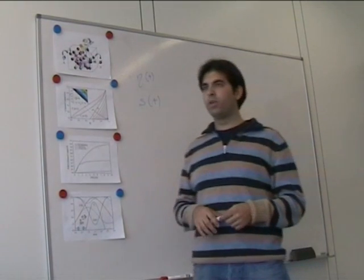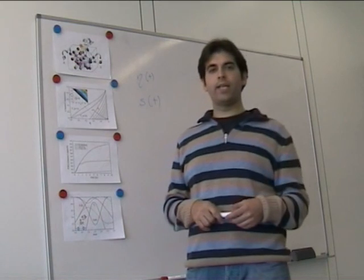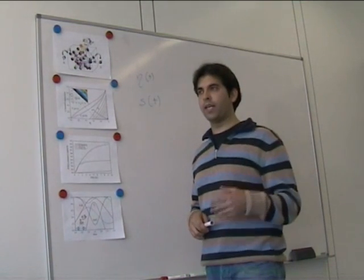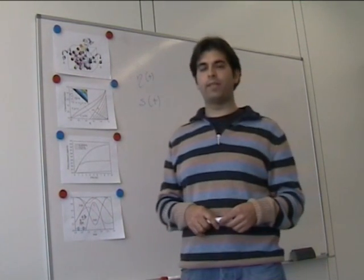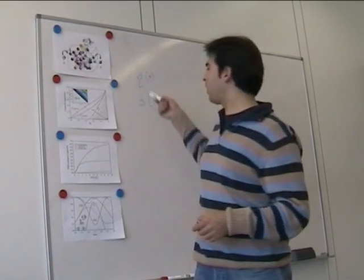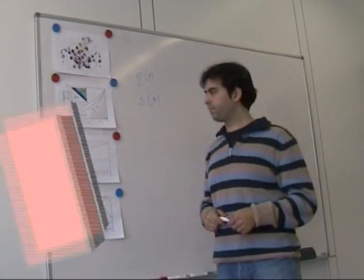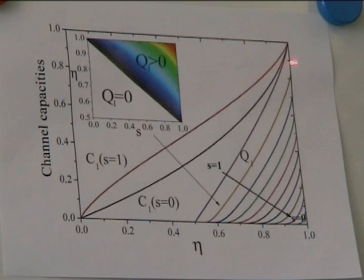In this work, we derived analytically and numerically the classical and quantum channel capacities for this large family of quantum channels. Here we plot the classical and quantum capacities as a function of ETA and S. They are both increasing monotonic functions of ETA and S, with ETA and S going from 0 to 1.